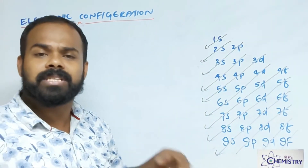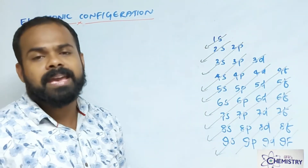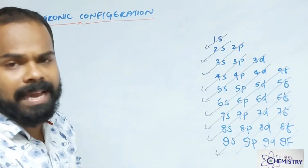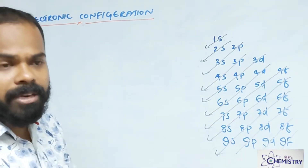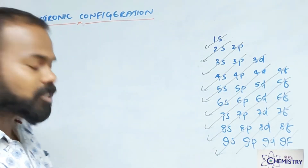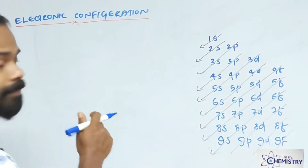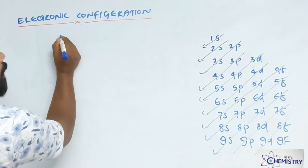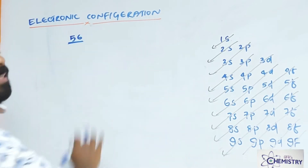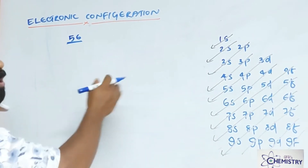How can we take the block, group, valency, and all other things from an atomic number? If I have one atom and I don't know what atom it is — in your question paper you may get only the number of electrons given. The number of electrons may be 56. How to arrange that and also how to check all other things?